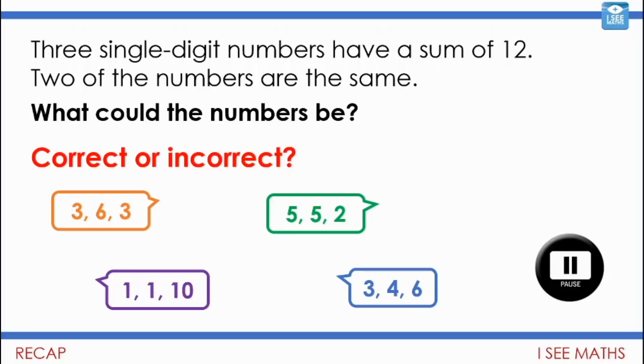Well, let's have a little look. The top two examples are correct. The bottom two are incorrect. Yeah, double three is six and add another six, that's twelve. And here double five is ten, add a two, that's twelve.